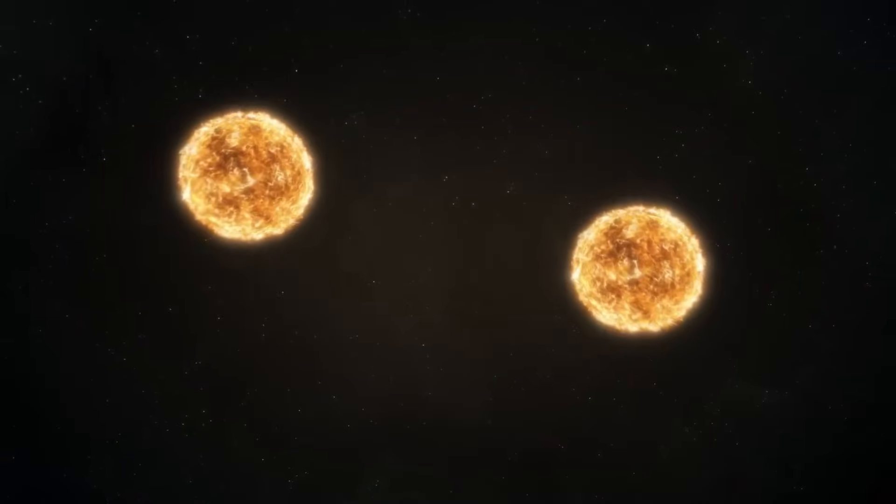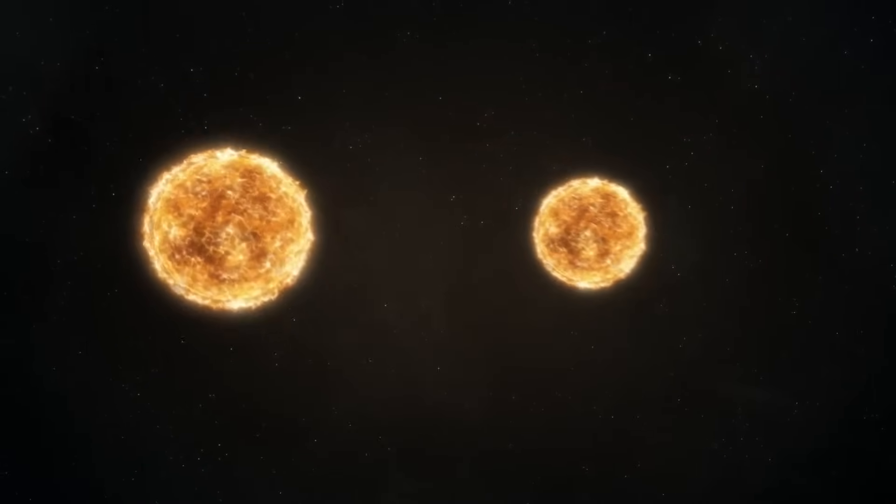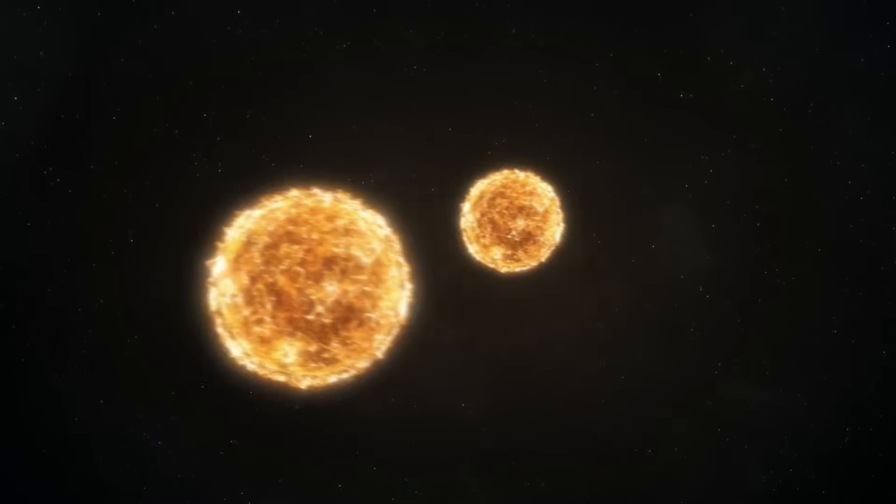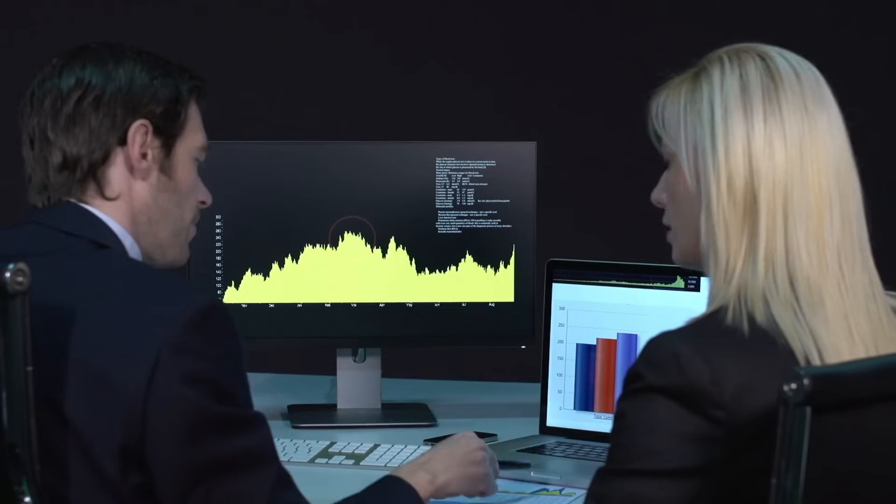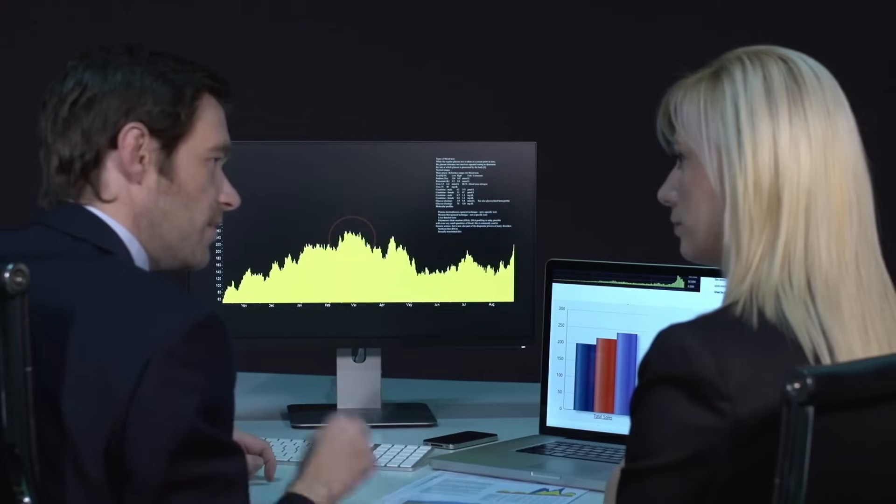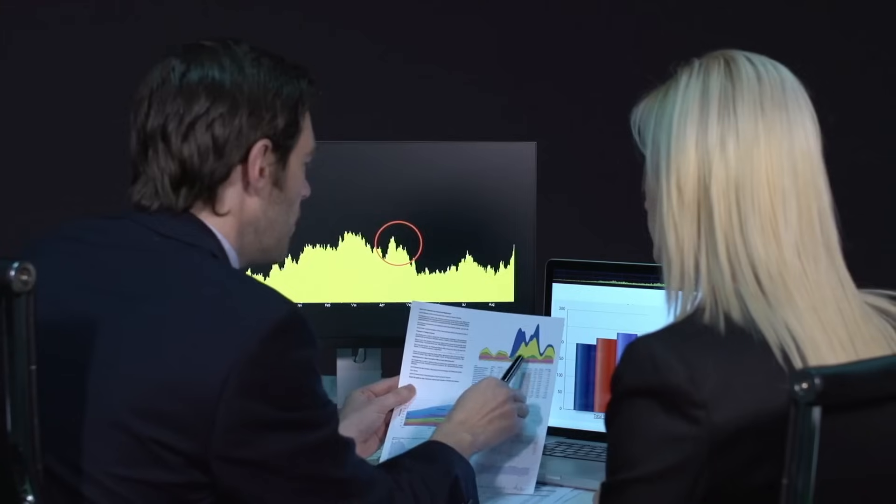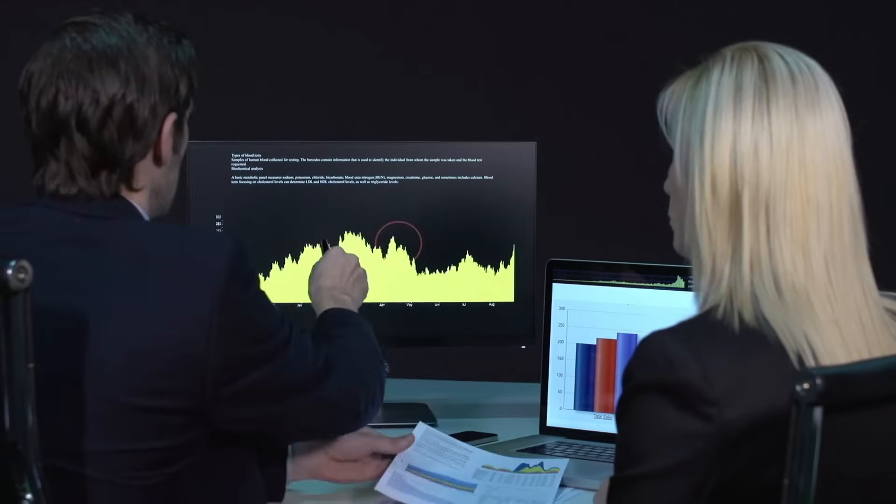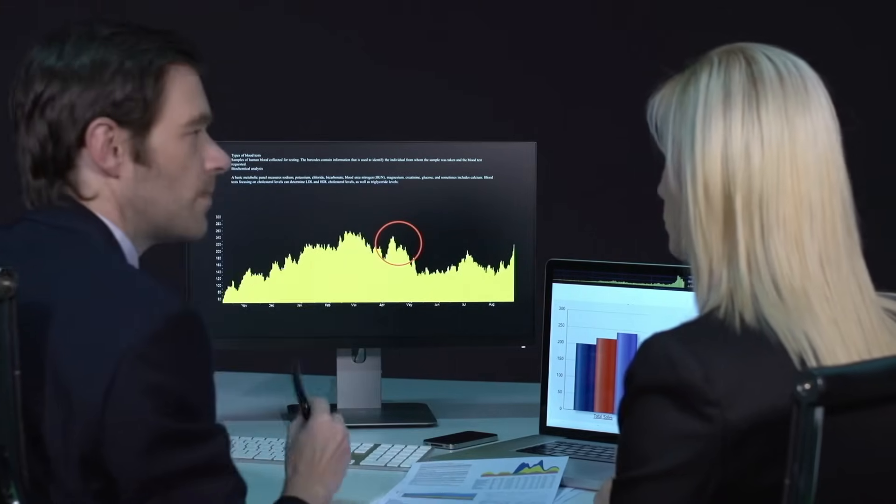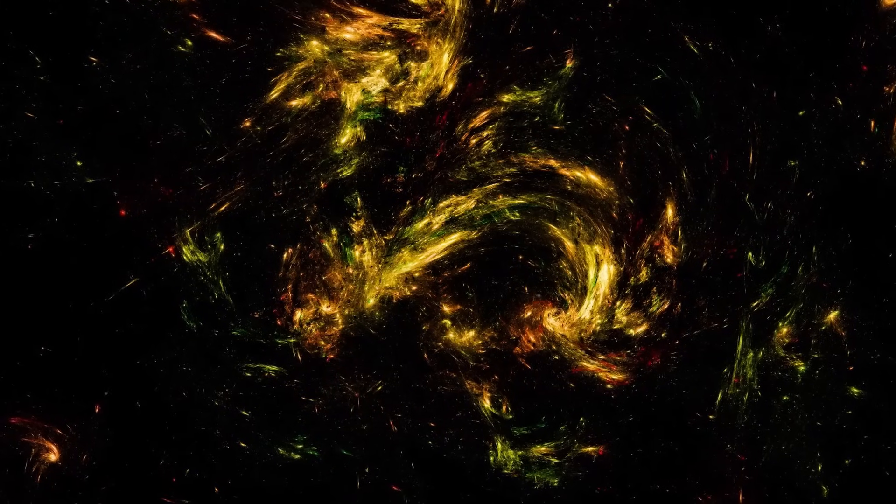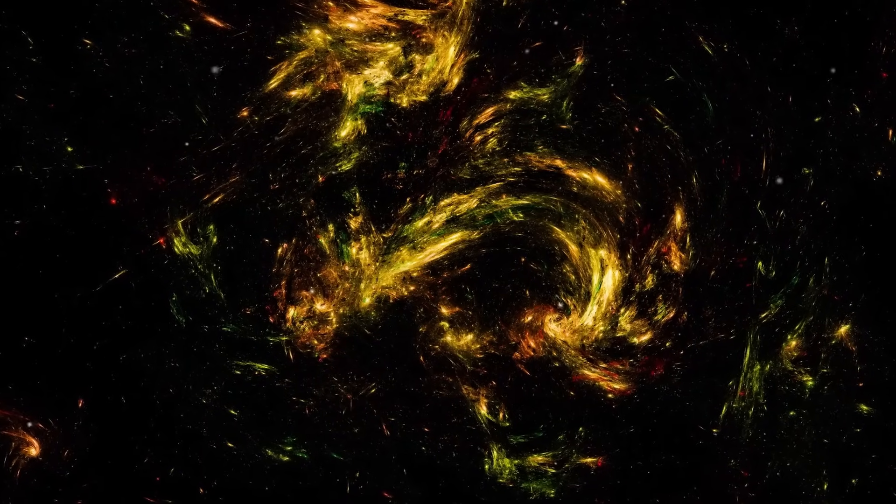As Betelgeuse vanishes from Orion's shoulder, it's being replaced by an expanding nebula, a colorful cloud of debris and energy, marking the spot where a cosmic giant once lived. Webb's observations prove that stellar endings are not final. They're transformations. The death of Betelgeuse is creating the building blocks for future stars, planets, and perhaps even life itself.